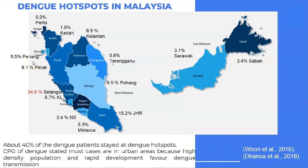For the dengue hotspot in Malaysia, Selangor is the red zone at 34.5%, followed by Johor at 15.2% and Kuala Lumpur at 8.1%. About 40% of dengue patients stay in dengue hotspots. The CPG on dengue states that most cases are in urban areas due to high population density and rapid development, which favours dengue transmission.